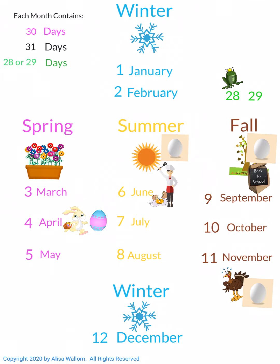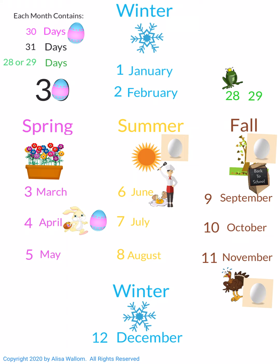I told you that the eggs would be super important. So let's look at an egg. Don't you think that the egg looks like the zero? I think so. So any month that contains an egg will have 30 days in it.